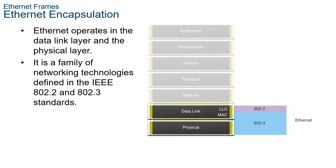Ethernet supports data bandwidths of the following: 10 Mbps, also known as Ethernet; 100 Mbps, or Fast Ethernet; 1000 Mbps, or Gigabit Ethernet; 10,000 Mbps or 10G; 40,000 Mbps or 40G; and 100,000 Mbps, also known as 100G or 100 Gbps. Ethernet standards define both the Layer 2 protocols and the Layer 1 technologies. Ethernet is defined by the data link layer and the physical layer protocols.